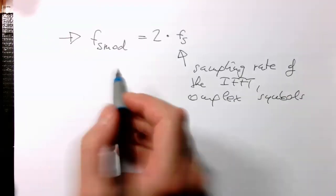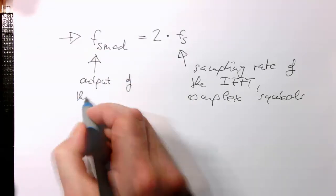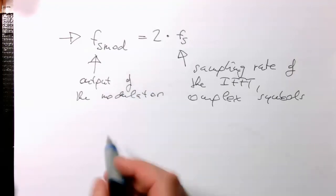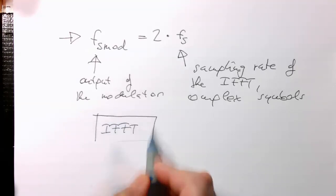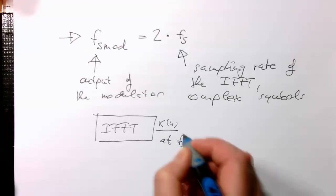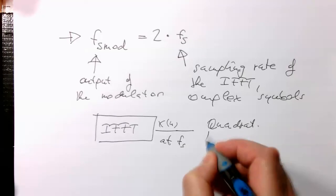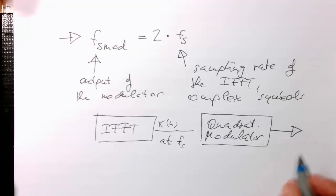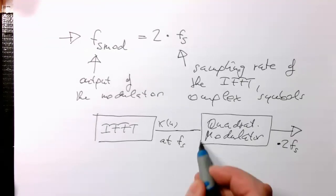The output sampling rate of our modulator, the output of the modulator, is two times the frequency. Remember, we've got our IFFT and our stream X of n at fs. Then we've got our quadrature modulator, and the output is at two times fs. So two times sampling rate here because we're interleaving real and imaginary values.